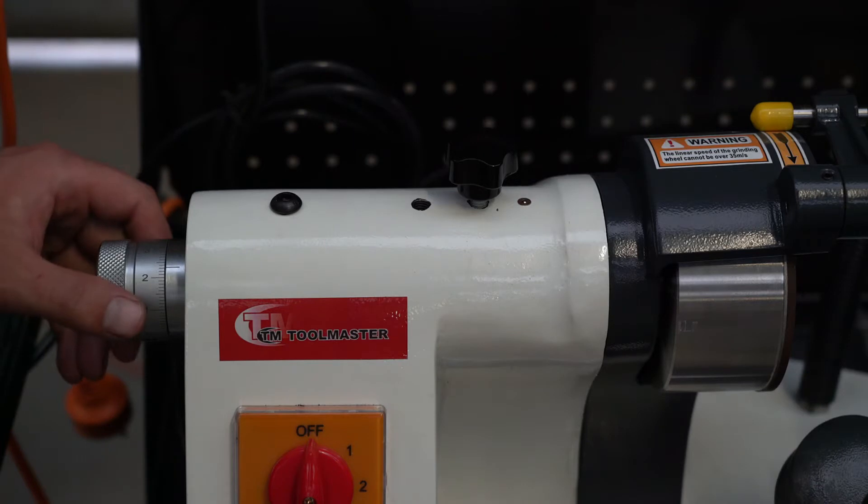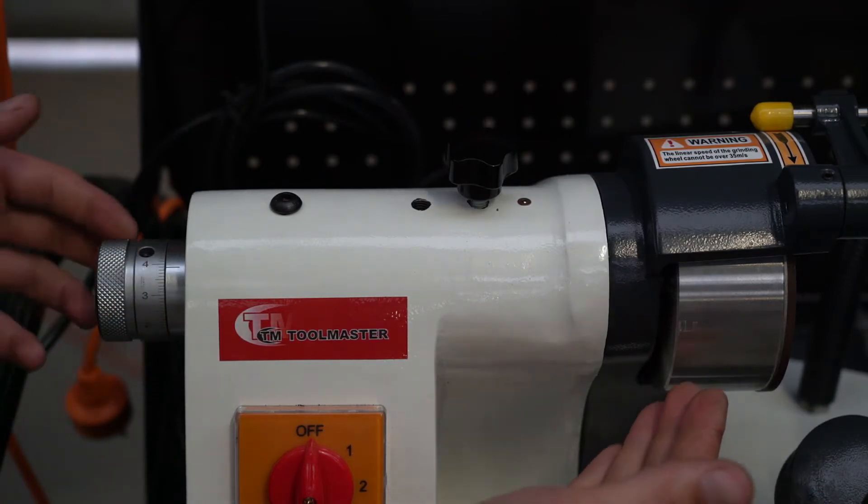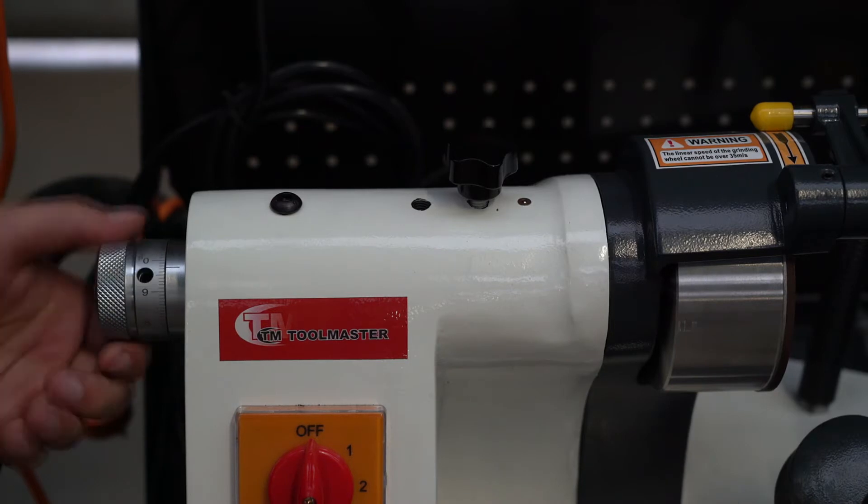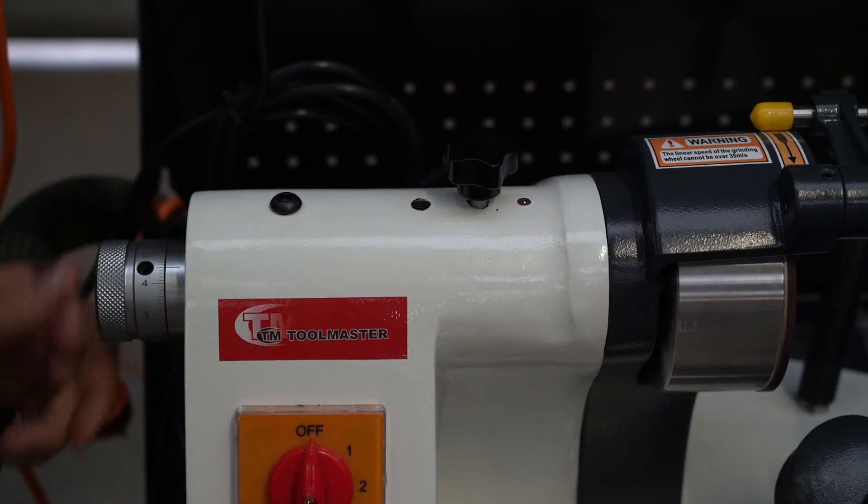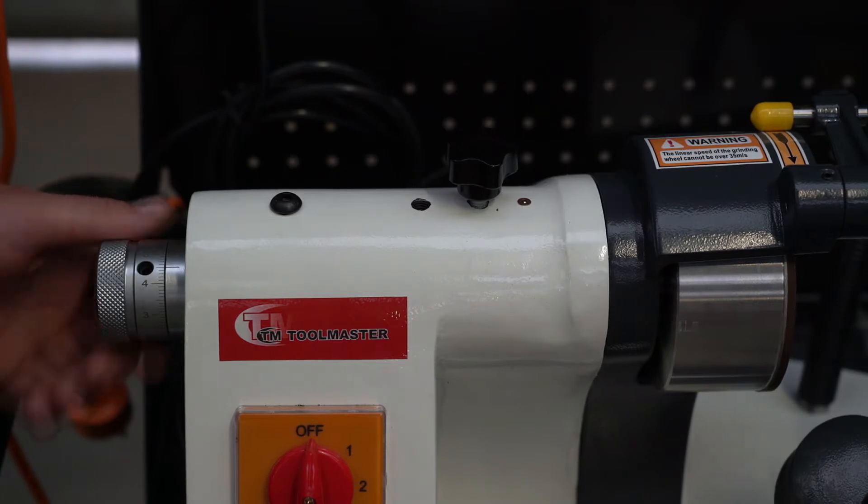At the top here, this knob allows you to move your grinding wheel backwards and forwards. It's probably going to be the most used thing on this grinder. You will use it when sharpening end mills or drill bits.